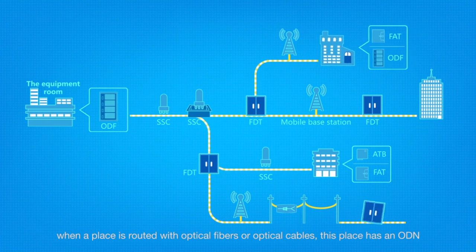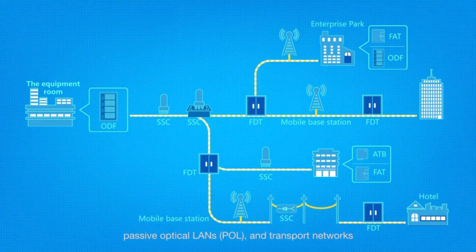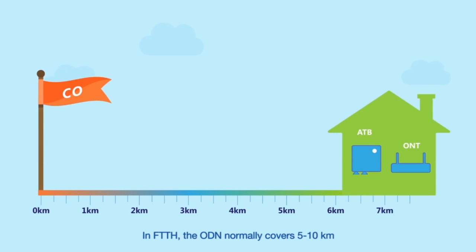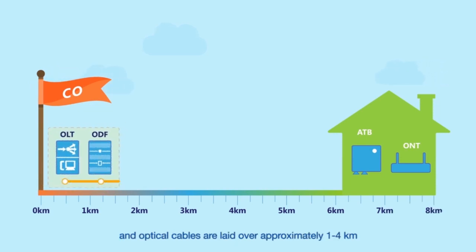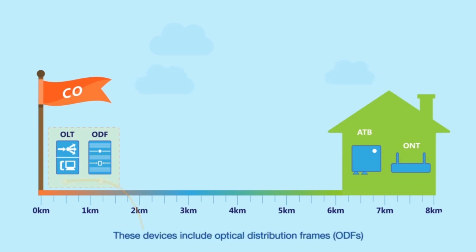Generally speaking, when a place is routed with optical fibers or optical cables, this place has an ODN. Examples include base station backhaul networks, passive optical LANs, and transport networks. In FTTH, the ODN normally covers 5 to 10 kilometers, and optical cables are laid over approximately 1 to 4 kilometers.